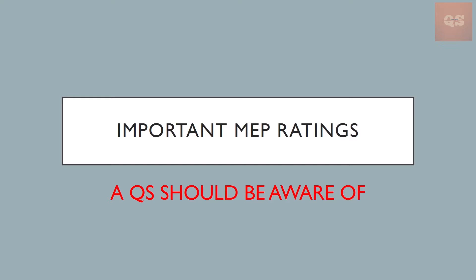As a quantity surveyor, we should be aware of the ratings of some important MEP items. This is required so that while we do our variations or while we procure materials, a QS should have an idea of the ratings required for completing a particular work. In this video we'll be looking into a few important ones only. Hope this video will be informative — without further delay, let's move into the video.